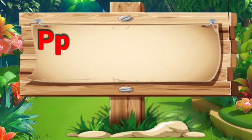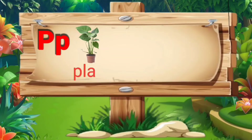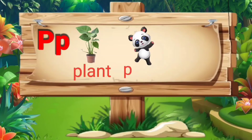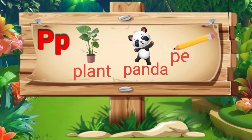P. P for plant: P, L, A, N, T — plant. P for panda: P, A, N, D, A — panda. P for pencil: P, E, N, C, I, L — pencil.